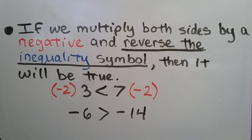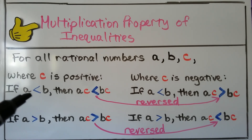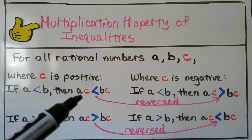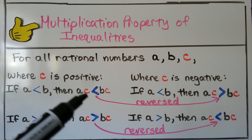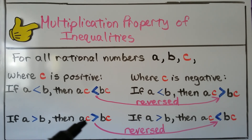That brings us to the Multiplication Property of Inequalities. For all rational numbers a, b, c — where c is positive — if a is less than b, then a times c will be less than b times c. And if a is greater than b, then a times c will be greater than b times c.